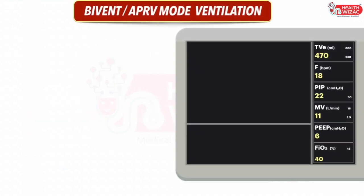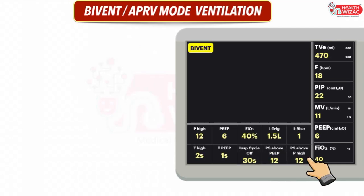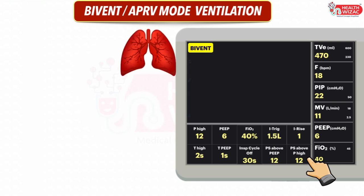Next is Bi-Vent mode, also referred to as APRV mode (Airway Pressure Release Ventilation) in some machines. In this mode we have to set P-high, T-high, PEEP, T-PEEP, FiO2, inspiratory cycle off time, inspiratory trigger, PS above PEEP, inspiratory rise time, and PS above P-high.